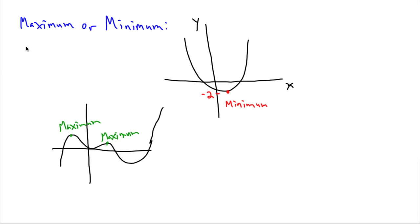The last thing we looked at were maximum or minimum values. This is an example of a global minimum, and these are examples of local maximums. Some people actually call these vertices as well. So with a quadratic equation like this one, it will actually have a vertex, and a vertex is very similar to a minimum.